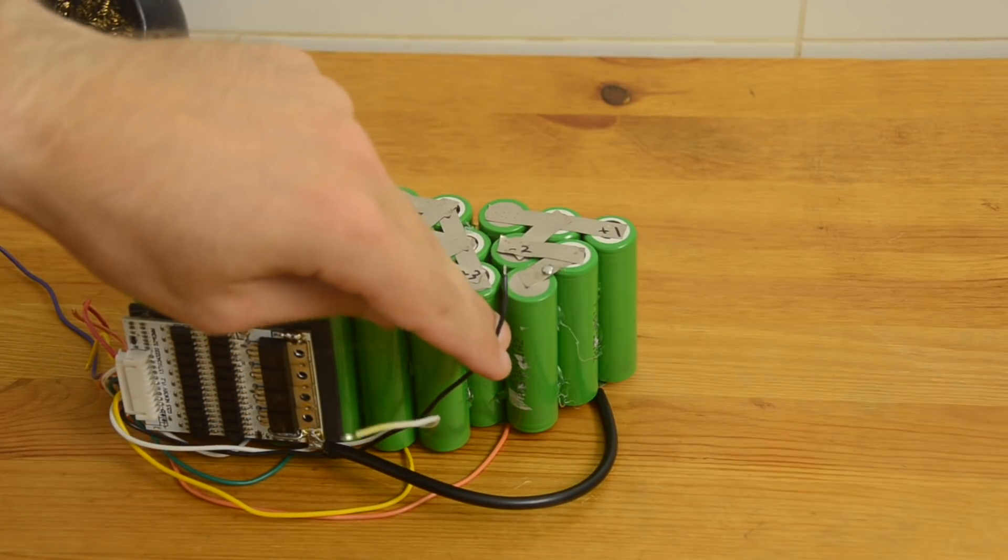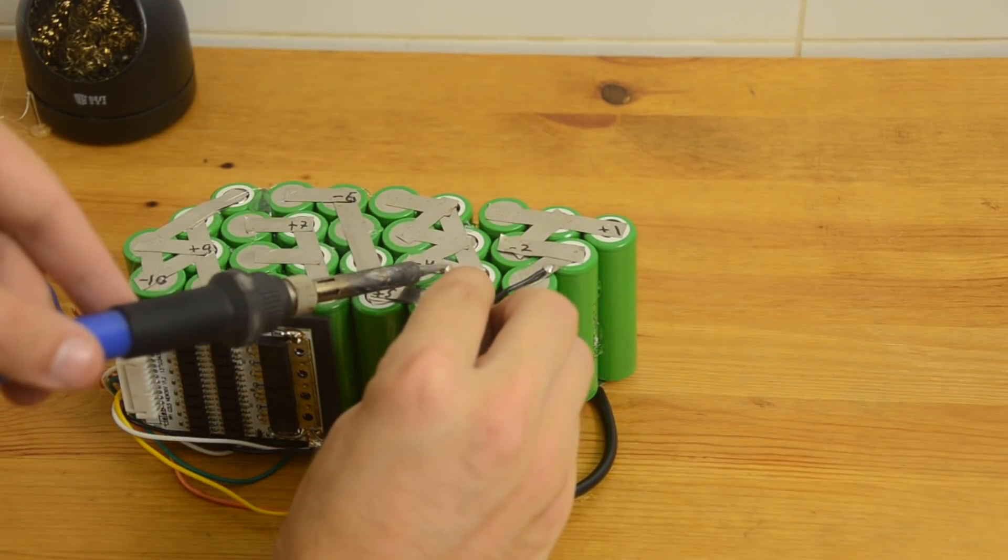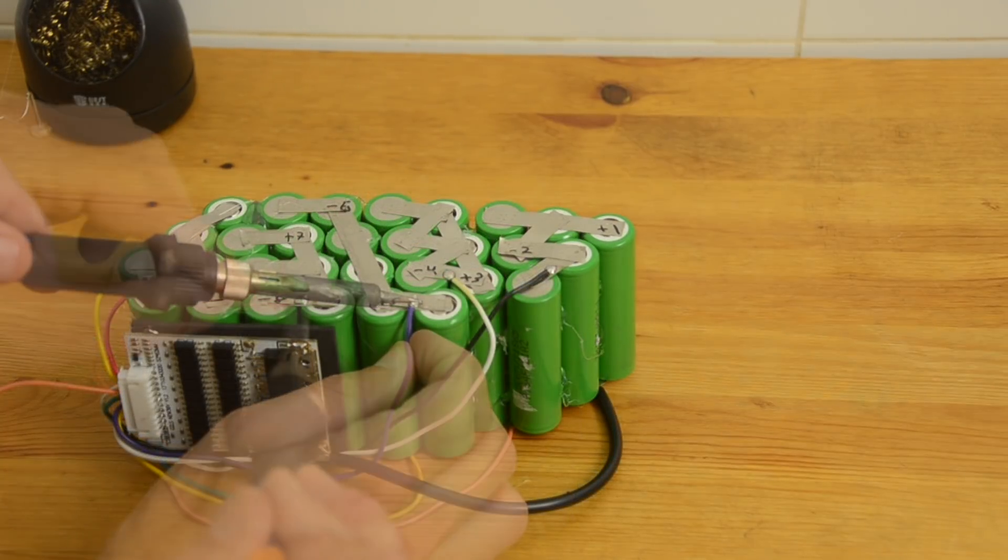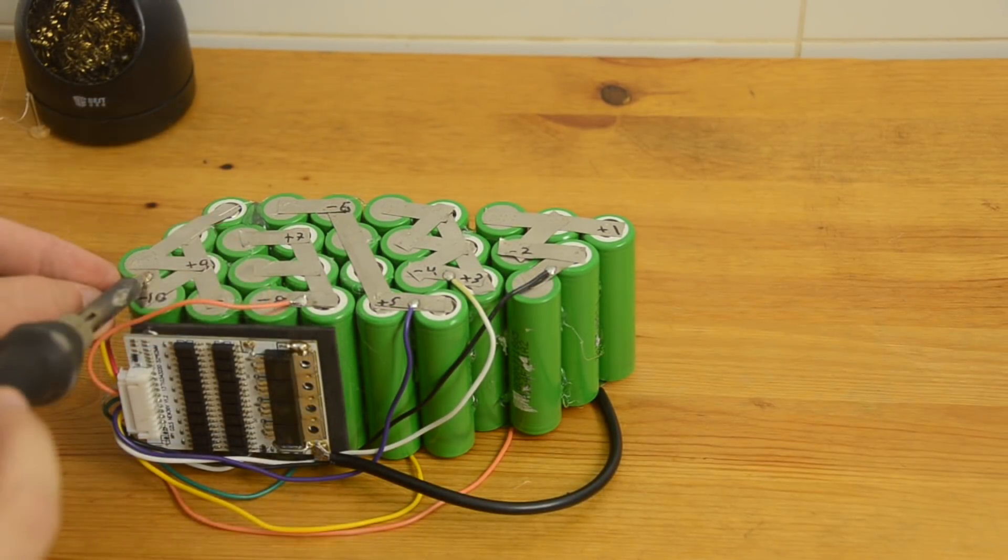Now when I flip the battery over, I can connect the balance wires on the plus 1, plus 3, plus 5, plus 7, and the plus 9 terminals.